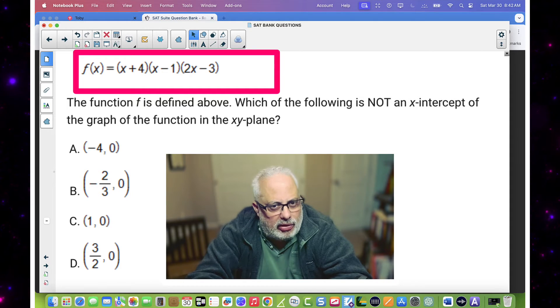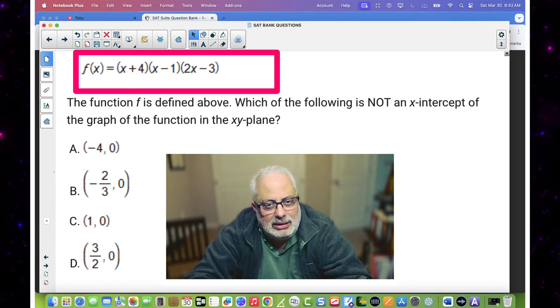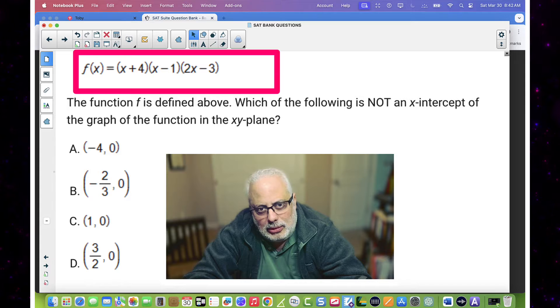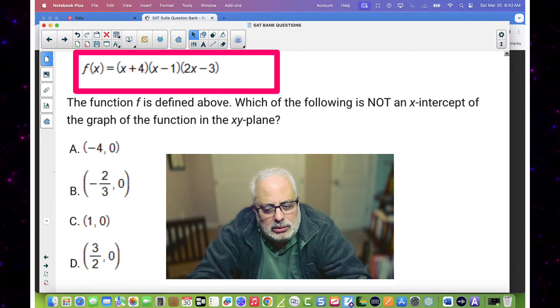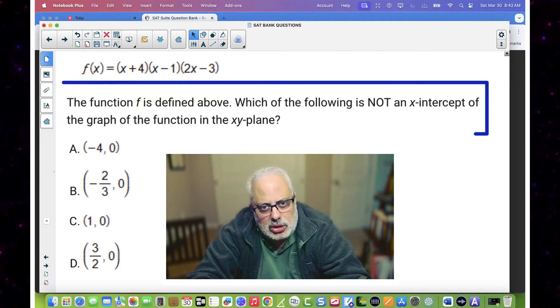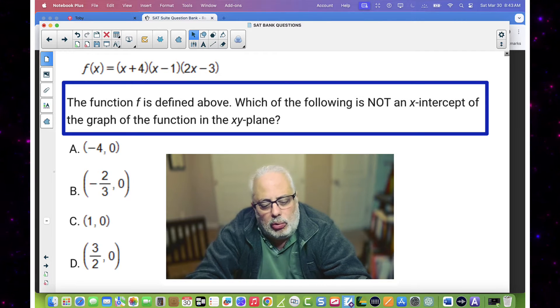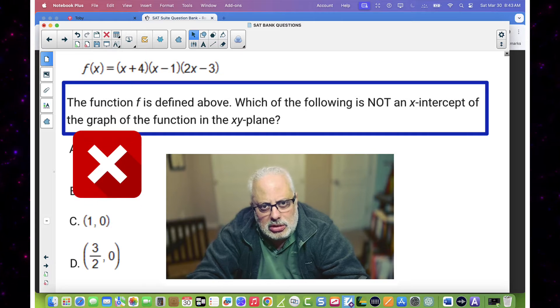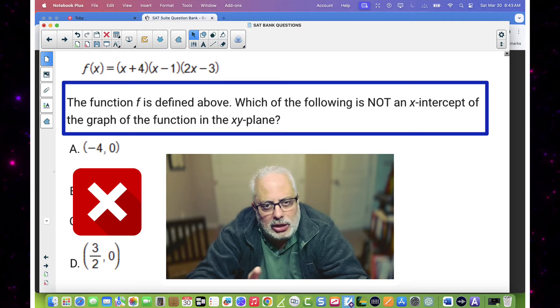When you read the problem, you have a function, but it's not written in the way we like it. It's factored. So we have products of parentheses, all of them x's. Also, we read the question and they said which of the following is not the x-intercept of the graph of this function. And we have four multiple choices. The idea is to move over the multiple choices immediately. Our eyes will be going over the multiple choices. This is what I don't want that you do.